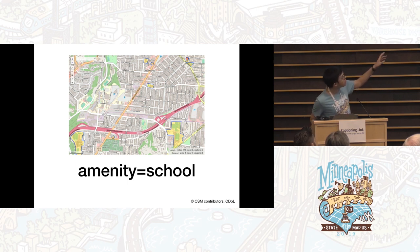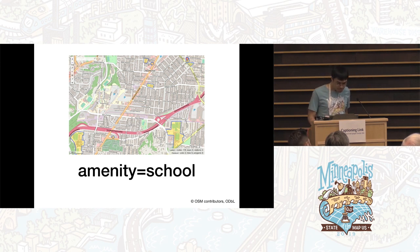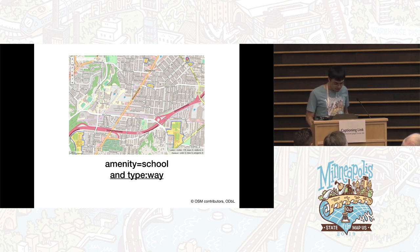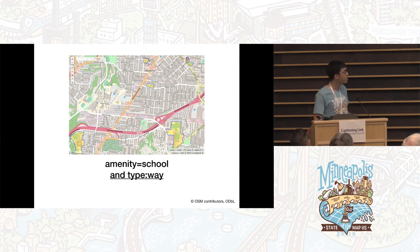This shows all the amenity equals school features in the current viewport of the map. This version of the query filters the results down to just school campuses that have been mapped as closed ways or areas.